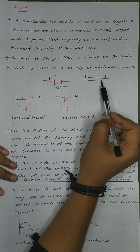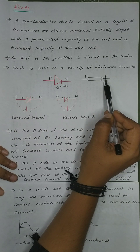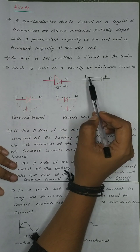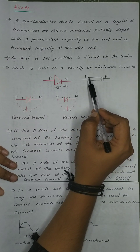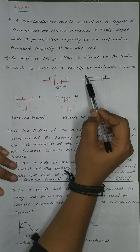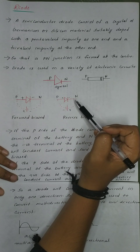This one side has a silver line. This silver line indicates the N-type side. The other side is the P-type.